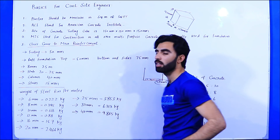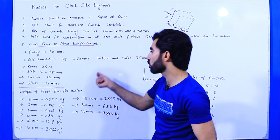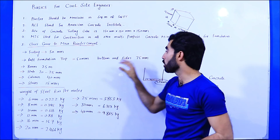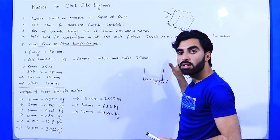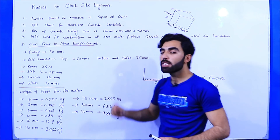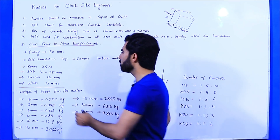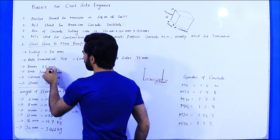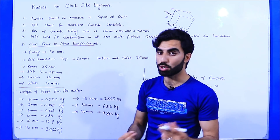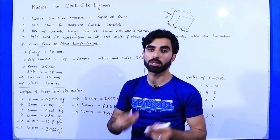For raft foundation: the top concrete cover should be 50mm, and the bottom and sides should be 75mm. So the sides and bottom of the raft foundation require 75mm concrete cover, and the top requires 50mm. For beams, the clear cover or concrete cover should be 25mm. For slabs, it ranges from 20 to 25mm, but 25mm is preferred.